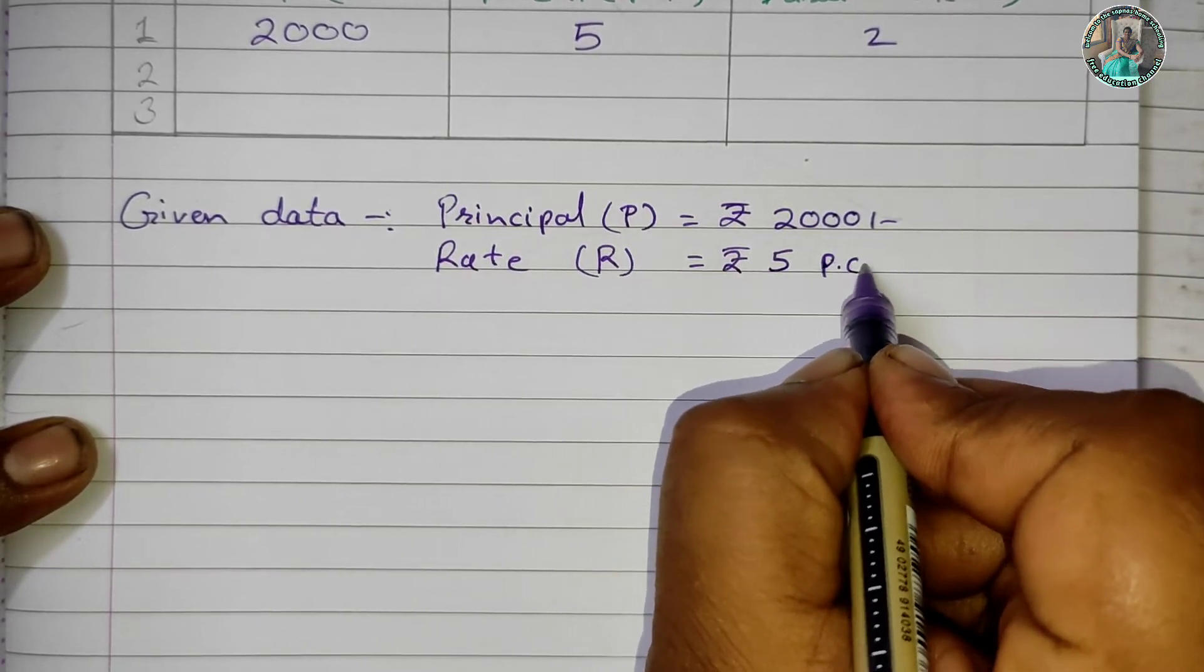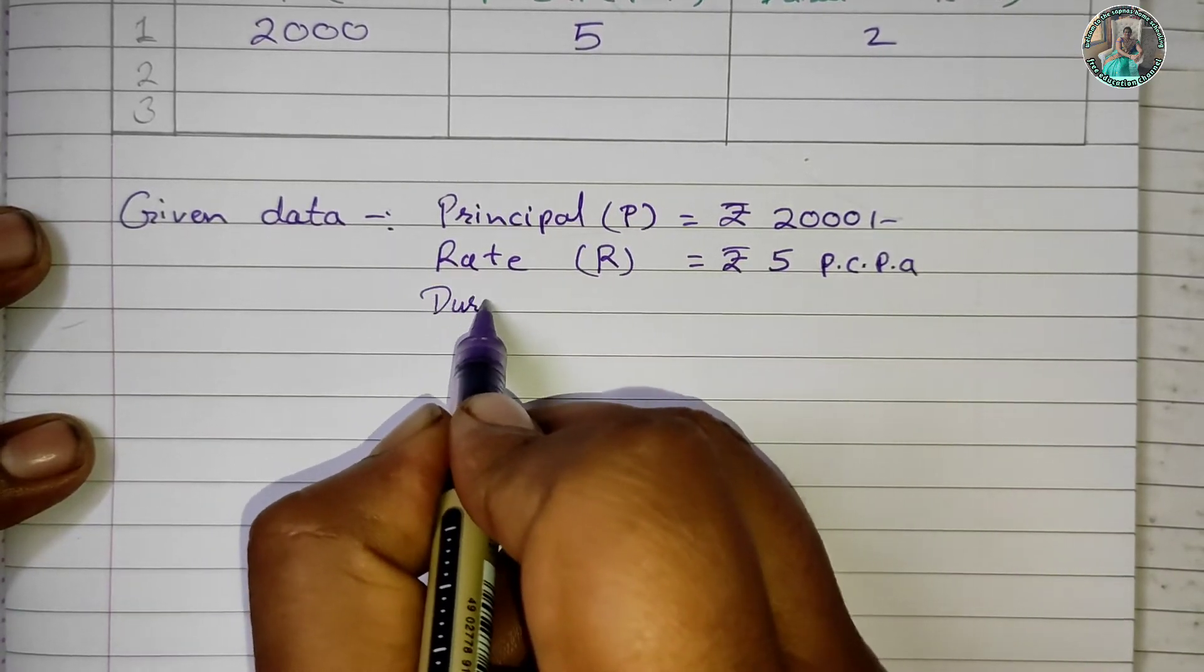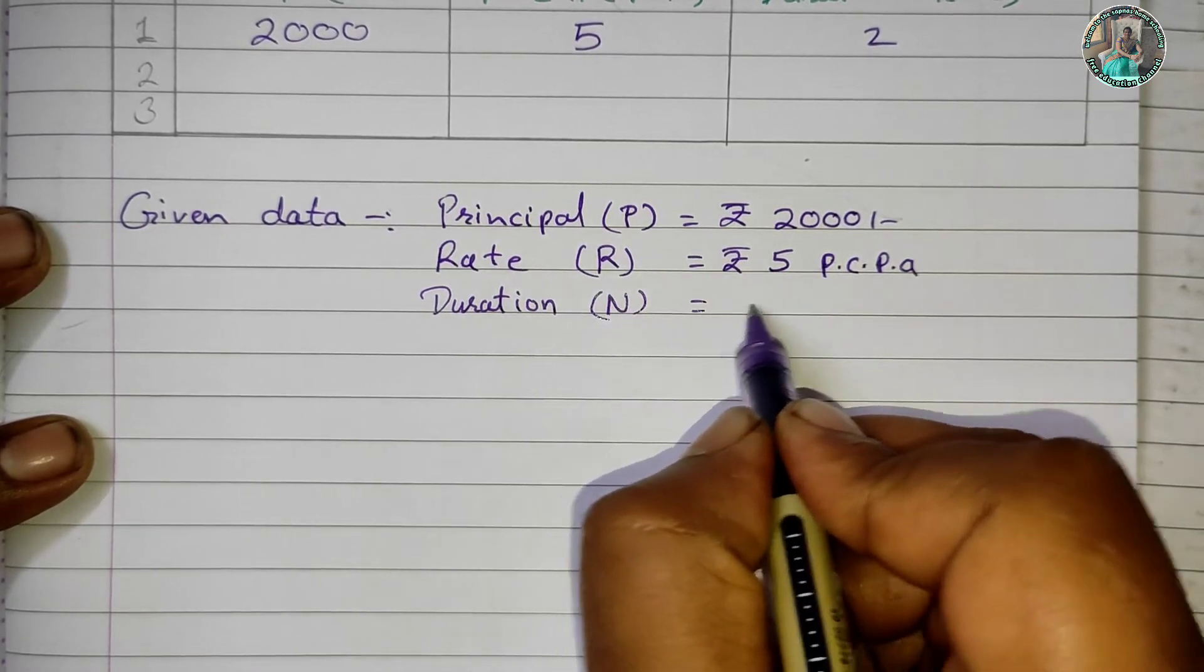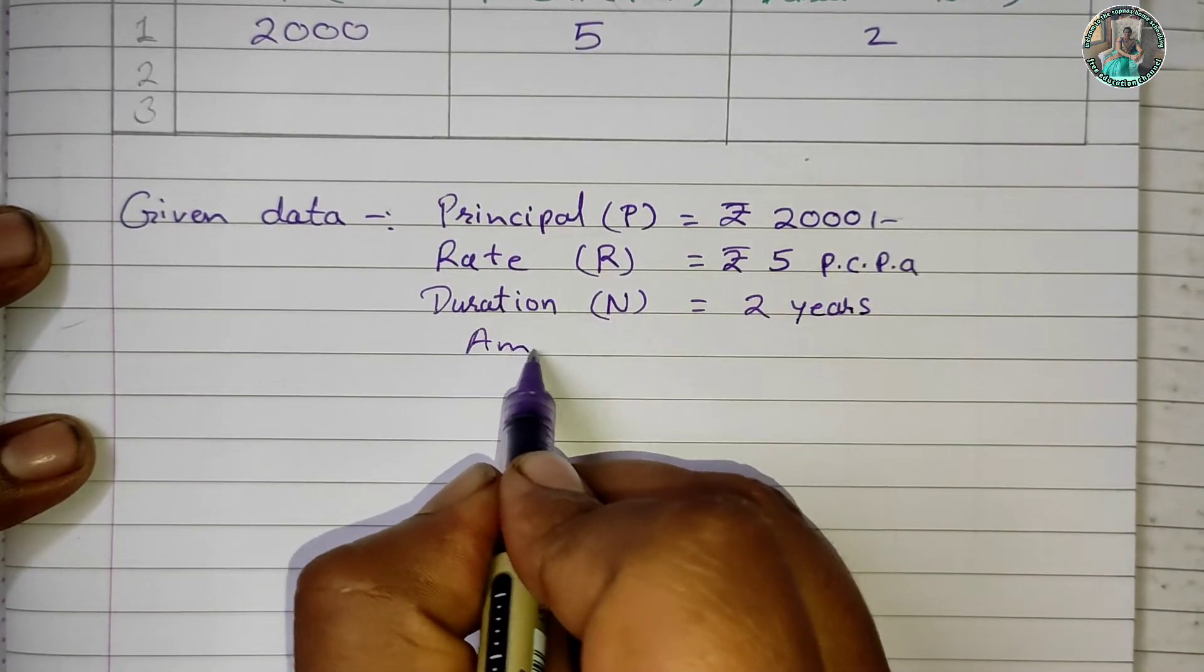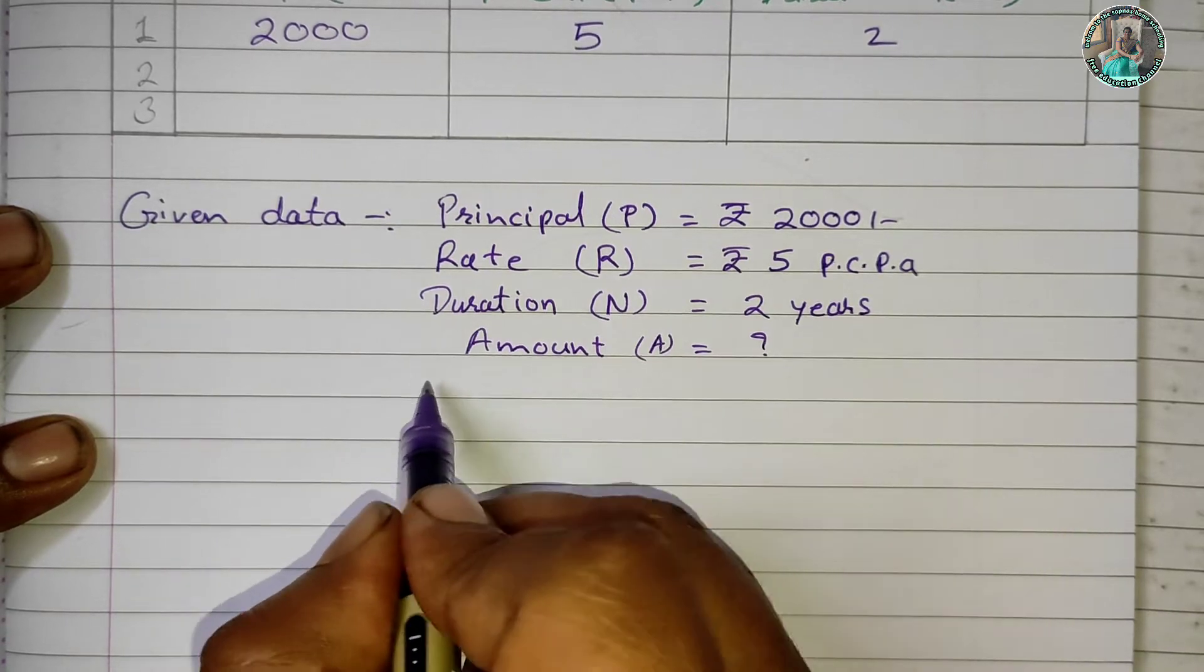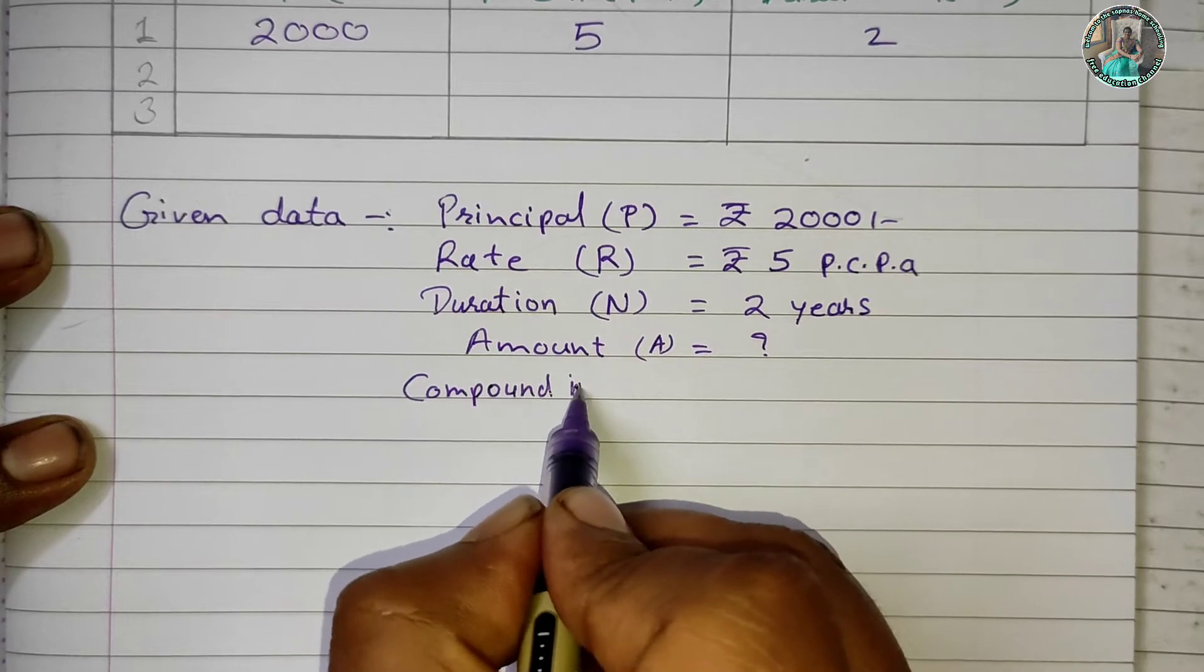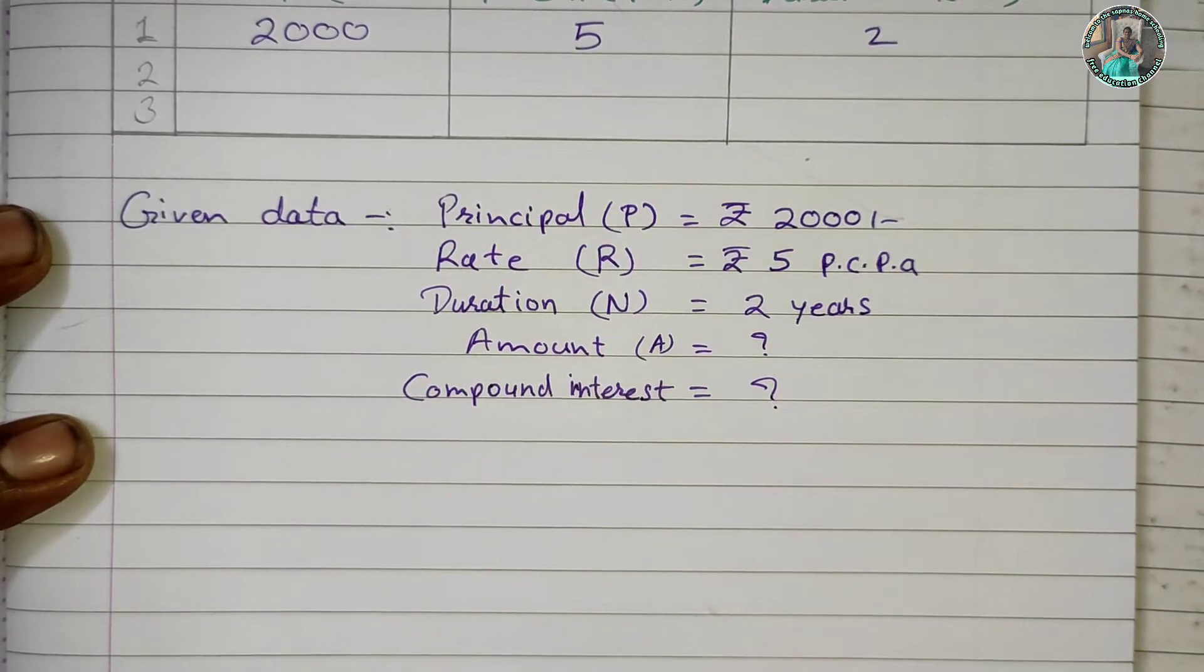The duration N is 2 years. We need to find out the amount A and the compound interest.